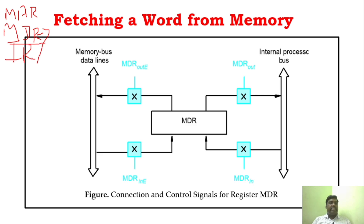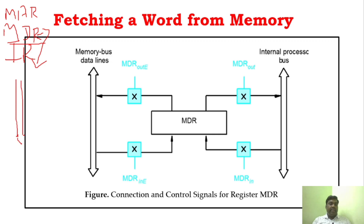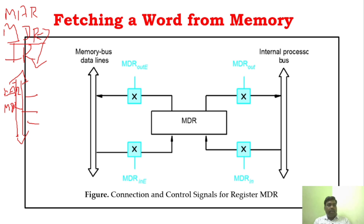Only from the memory data register is the instruction sent to the IR. In single bus architecture you would have seen a single bus connected with many registers, including the MAR and MDR. If you have not watched the single bus organization video, first go and watch that video and then come to this video so you can understand very clearly. From single bus organization, you know that MAR has only a single input and single output — connected to the internal bus and the external bus.